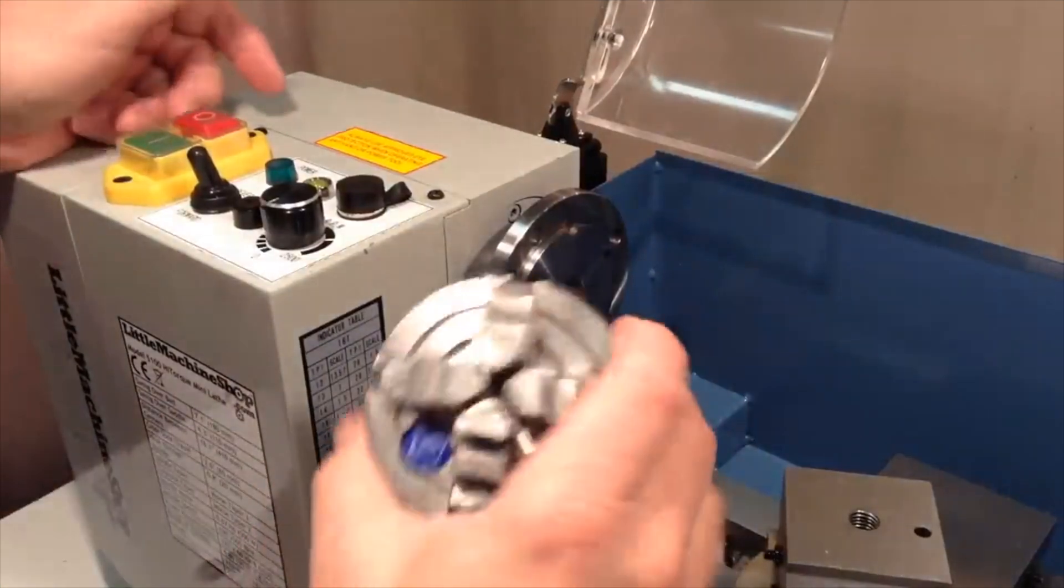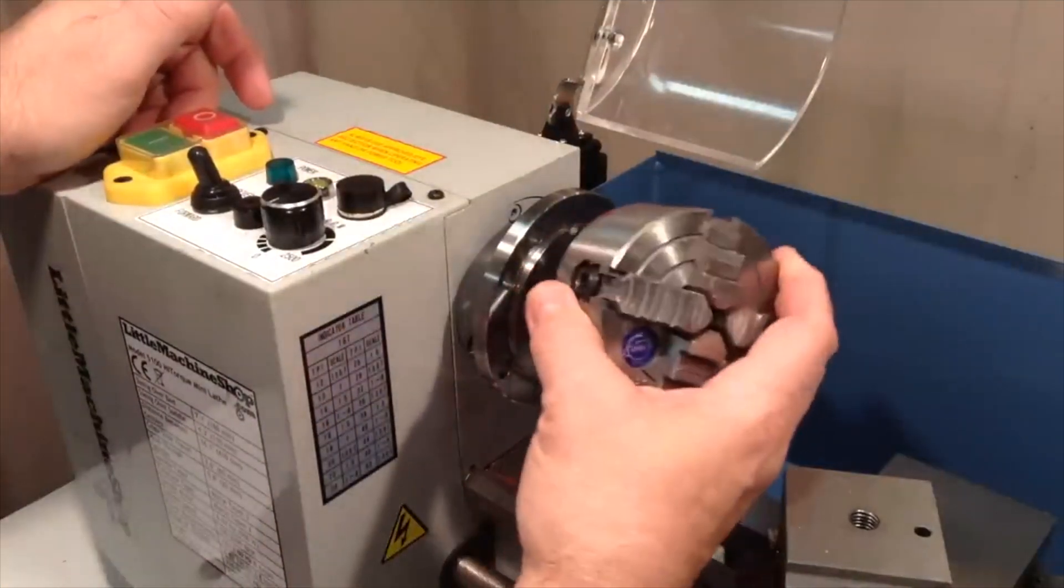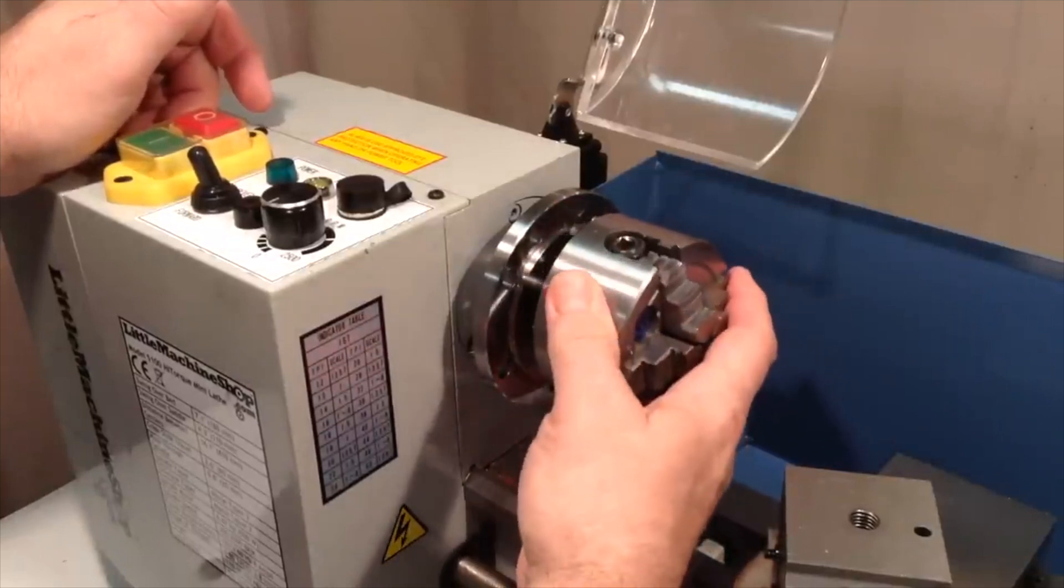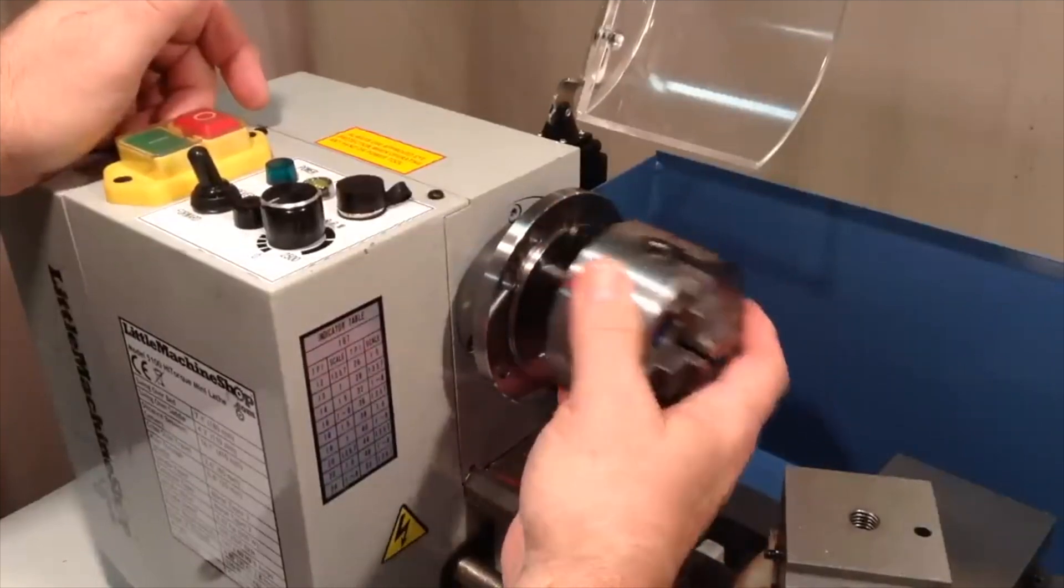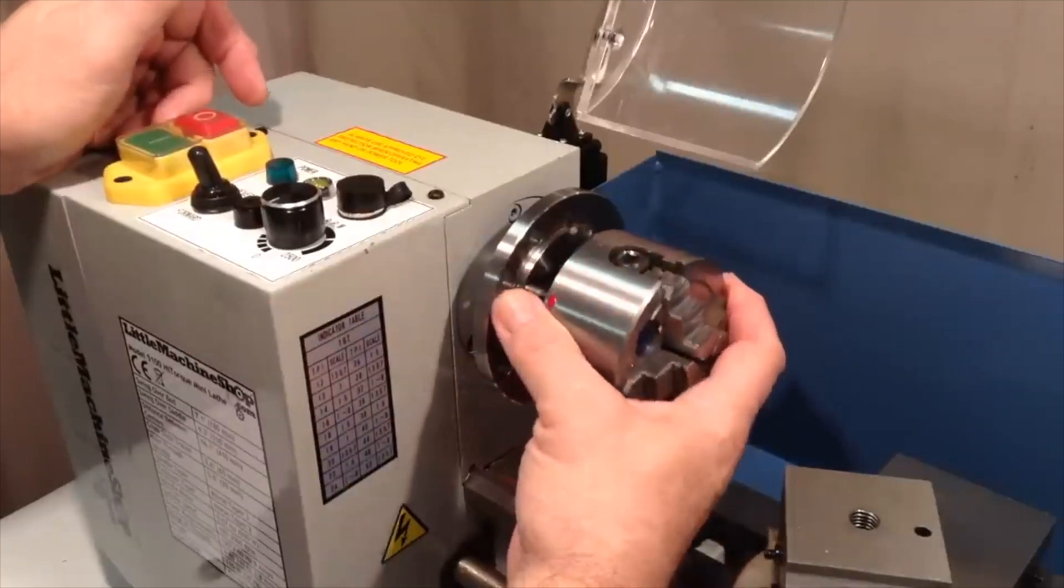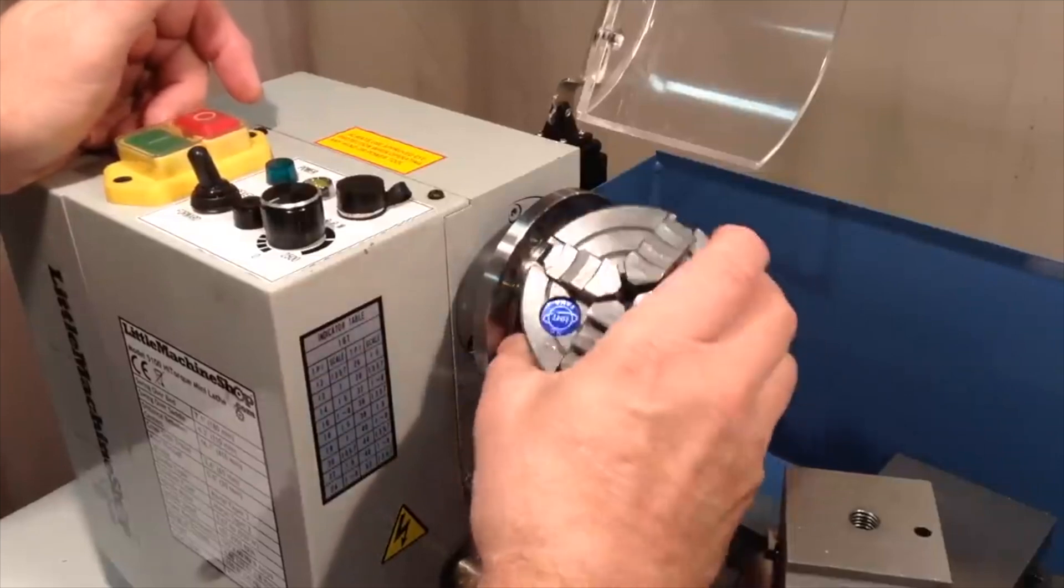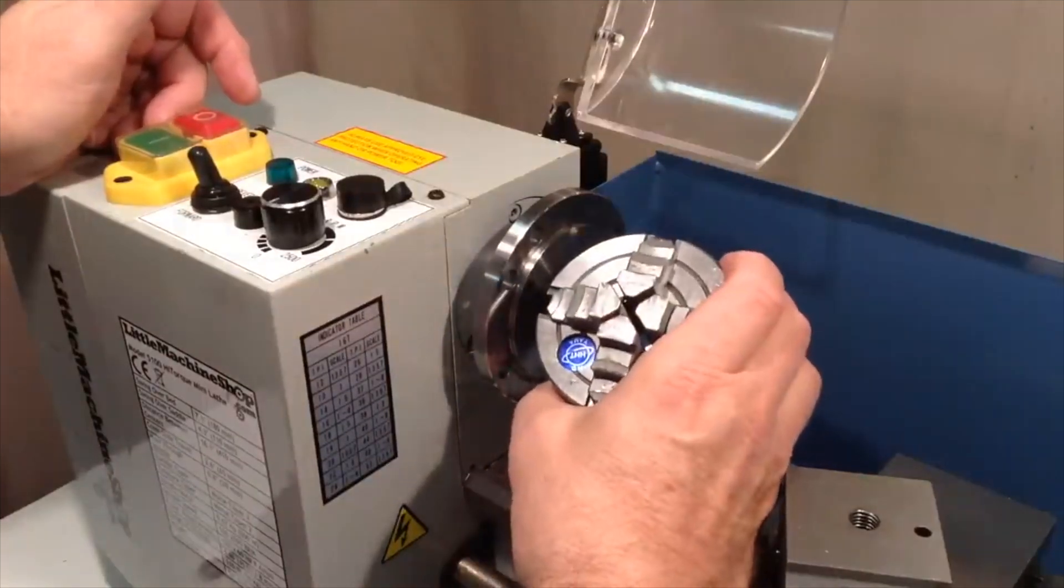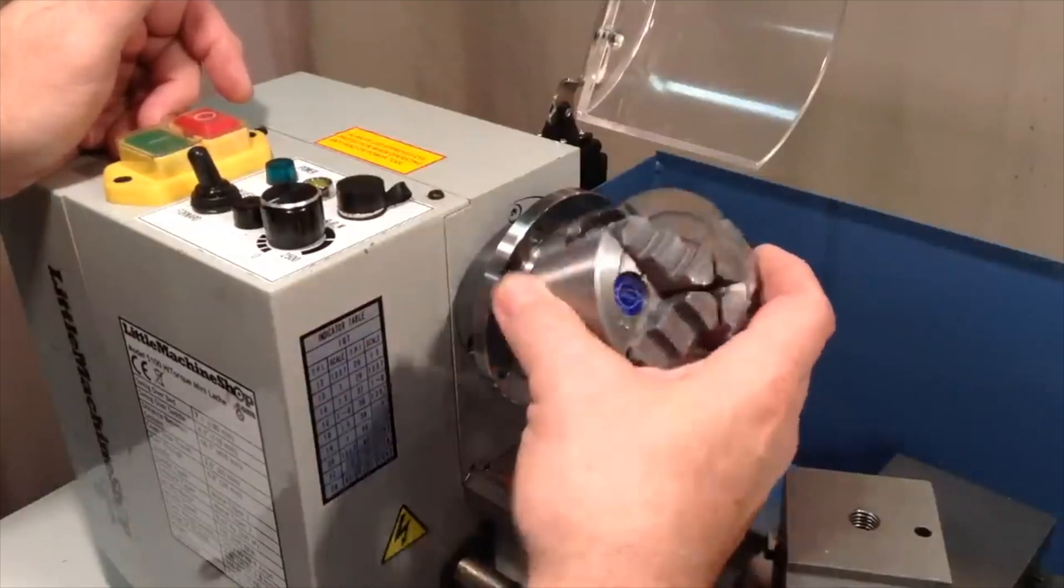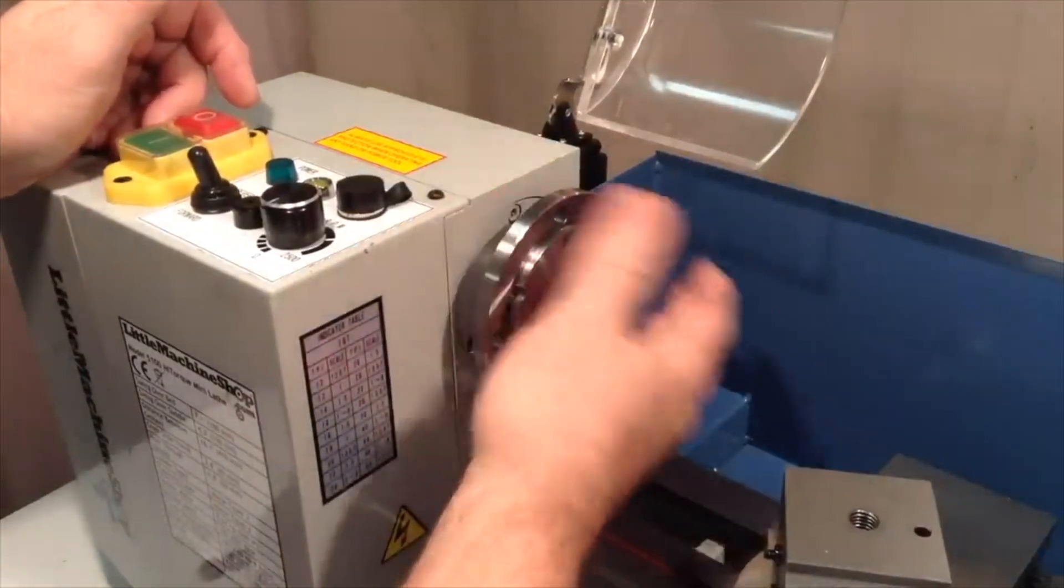So you have to go to a 4 inch 4 jaw chuck, but that's actually a good thing. The 3 inch is probably a little undersized in my opinion anyway, and the 4 inch 4 jaw chuck is a lot more versatile just because you have greater capacity.